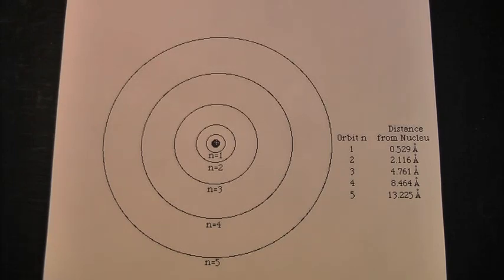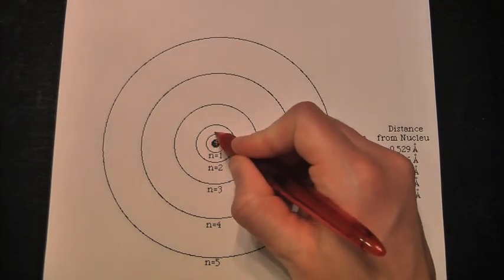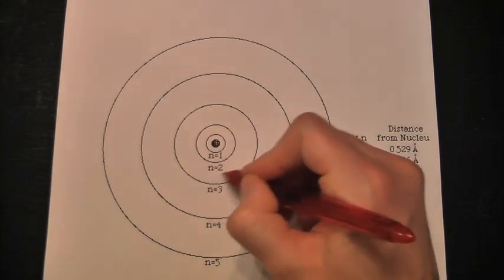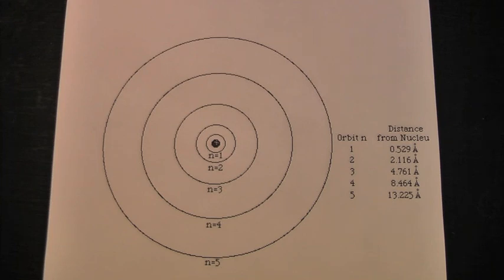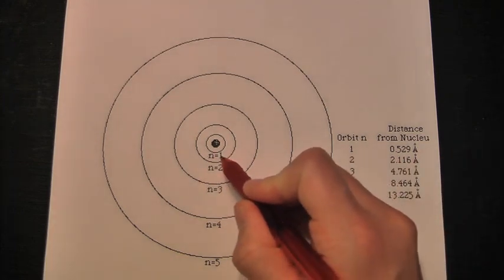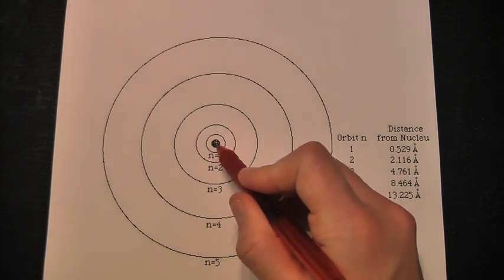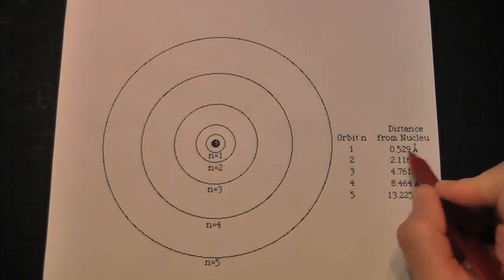This is a picture of the Bohr model of the hydrogen atom. Here's the nucleus. And then each of these rings represents a fixed orbit that Bohr proposed. These orbits are quantized, meaning there's nothing in-between. It's just a specific value for each orbit. n equals 1 represents the first orbit, and that is always a certain distance from the nucleus.